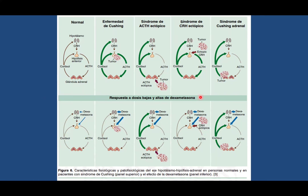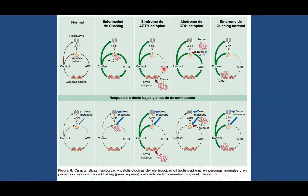En la enfermedad de Cushing con afectación principalmente a nivel de la hipófisis, esta libera ACTH en un ciclo constante, no va a haber una detención del ciclo circadiano, porque el tumor no va a responder al feedback negativo. Por lo tanto se va a seguir liberando ACTH y el cortisol va a seguir en ese ciclo de manera repetitiva. En el ectópico, la ACTH va a estar disminuida porque va a responder el feedback, pero el tumor va a seguir produciendo ACTH ectópica para estimular el cortisol y generar el ciclo de manera constante.